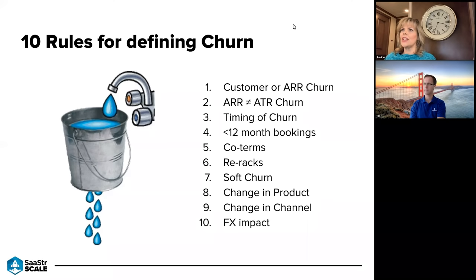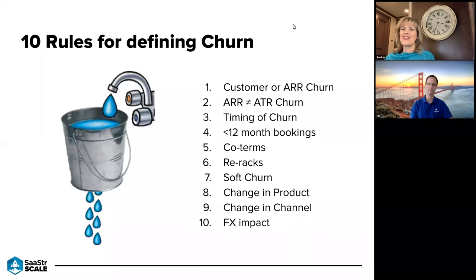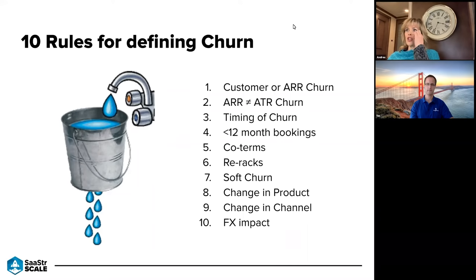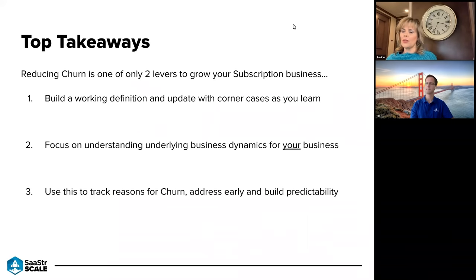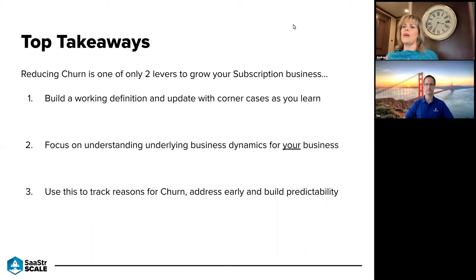Same for change of product and change of channel — there's lots of variability, but as long as the customer is spending the same amount or more, we shouldn't be taking churn on an annualized basis. It is funny to turn this into a list of 10, because there are so many nuances underneath it. But these are a great set of highlights for where to start. Building a working definition and updating the corner cases as you learn is incredibly important — where we started at SolarWinds is certainly not where we are today.